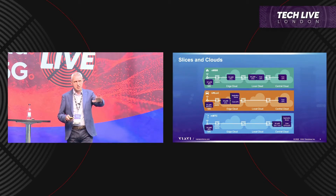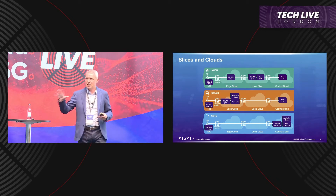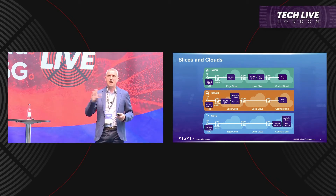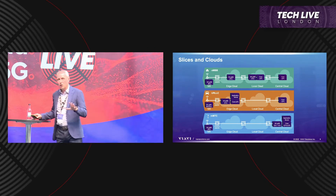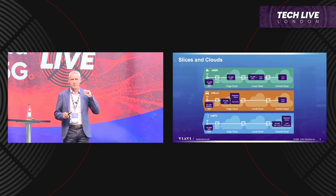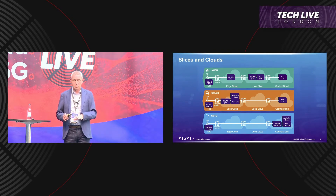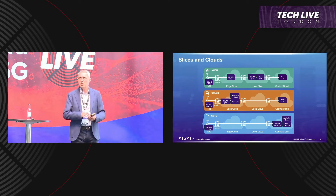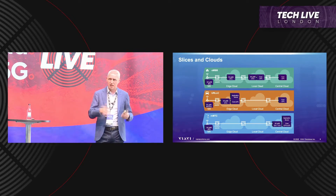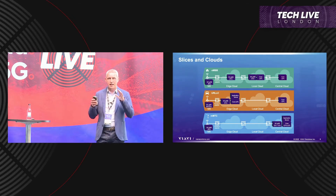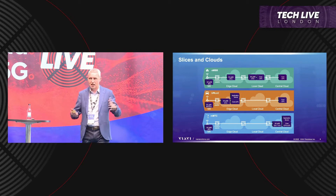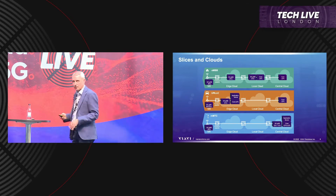Looking at the three classes of service to be delivered: the first is enhanced mobile broadband. That's basically where a lot of the industry is now — upgrading 4G sites to 5G sites, typically connecting back into a 4G core. It's mostly been the RAN getting updated with new antennas and new capabilities in the cell site. That's still basically happening now, giving us better broadband and better access.